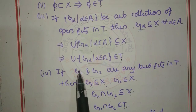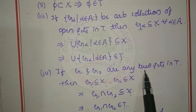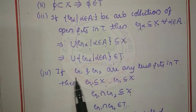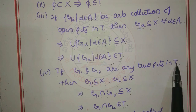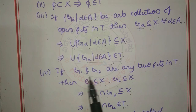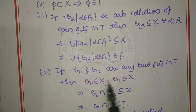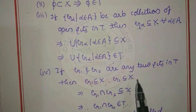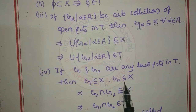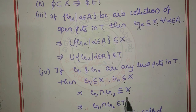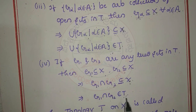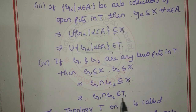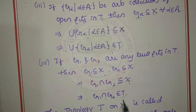Fourth condition: let G1 and G2 be any two sets in T. Since T is the collection of all subsets of X, G1 and G2 are both subsets of X. This implies G1 intersection G2 is also a subset of X, and therefore G1 intersection G2 belongs to T.